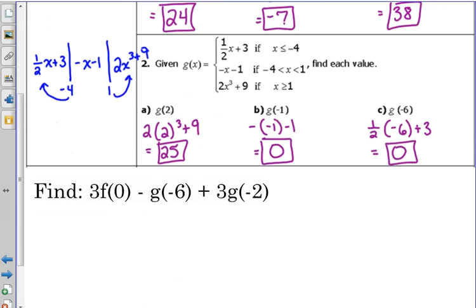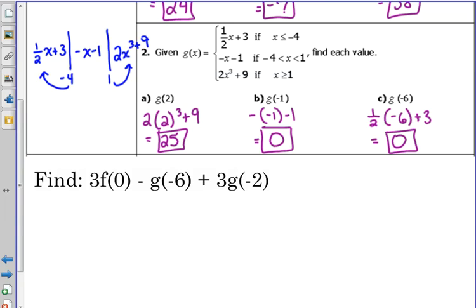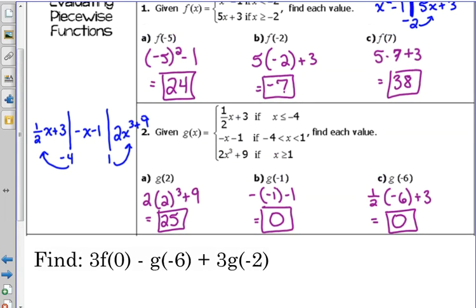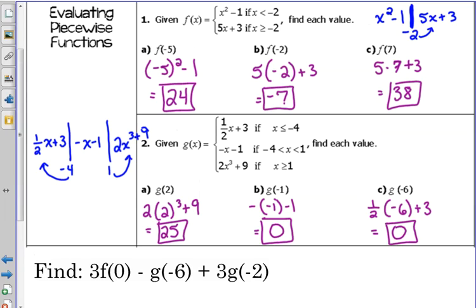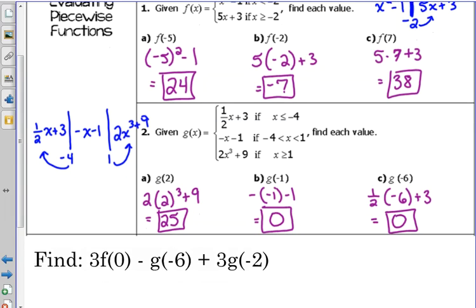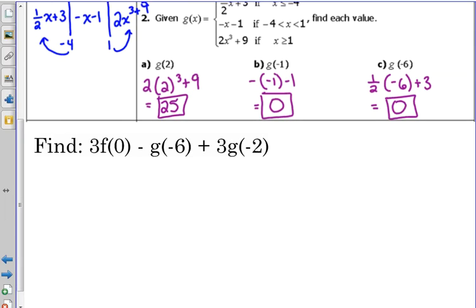Over on the left side of your paper you should see this: 3 times f of 0 minus g of negative 6 plus 3 times g of negative 2. That's a whole lot of information. I have seen questions like this on release test questions. They're asking you to use two different piecewise functions at the same time and combine the results. The easiest way to handle this is to go to the side and write out f of 0, g of negative 6, and g of negative 2, and find those answers individually.